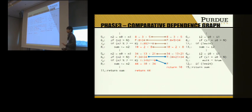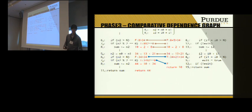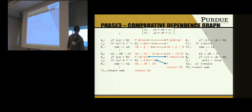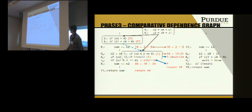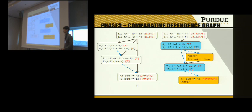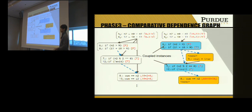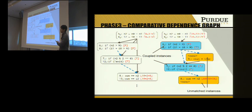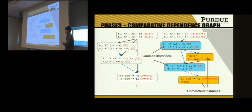After discovering all matching, alignment, and coupling information, we construct the dependence graph by merging these instances. We merge matched nodes such as 5.3 and 6.3, and similarly merge all matched, aligned, or coupled nodes together. Repeating this constructs a comparative dependence graph for the entire execution. In this graph, blue nodes represent coupled instances and yellow nodes represent unmatched instances — where one side is null — indicating these instances have no match in the other execution.